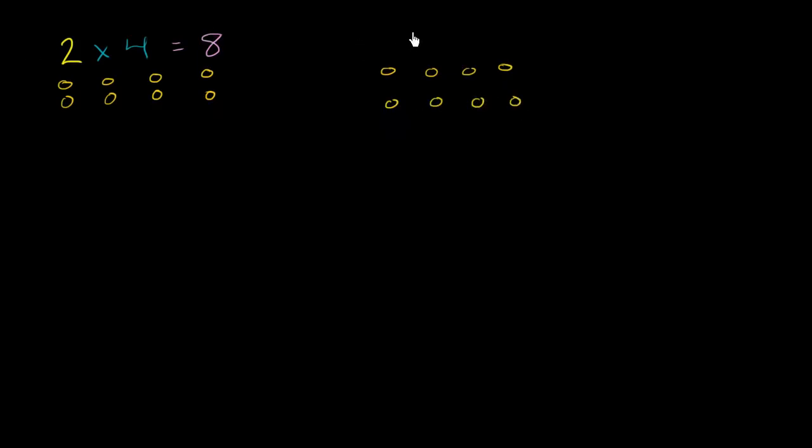So now we're going to start with the 8. And we could say, well, let's try to divide that into 4 groups, 4 equal groups. Well, that's 1 equal group, 2 equal groups, 3 equal groups, and 4 equal groups. And we see when we start with 8 divided into 4 equal groups, each group is going to have 2 objects in it.